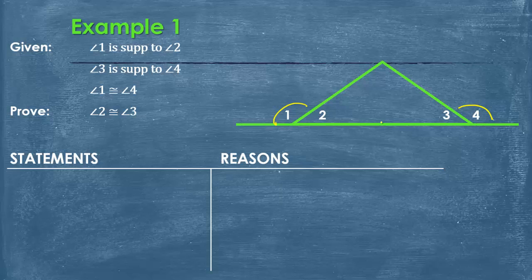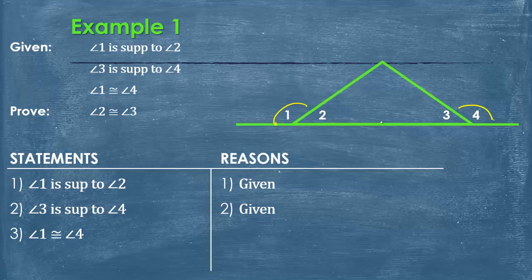But I decided to split up the givens and say: angle 1 is supplementary to angle 2, given. Angle 3 is supplementary to angle 4, given. And angle 1 is congruent to angle 4, given.